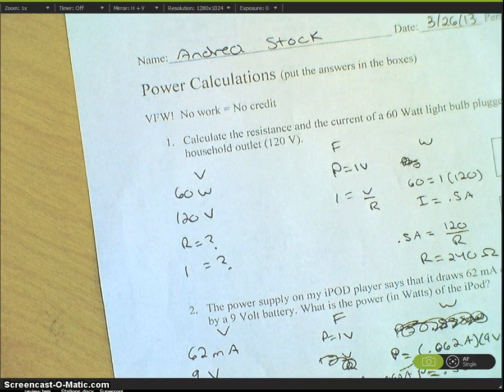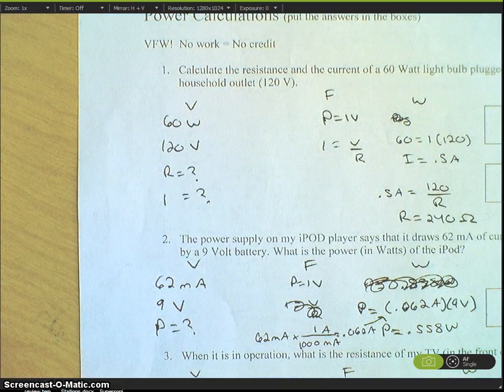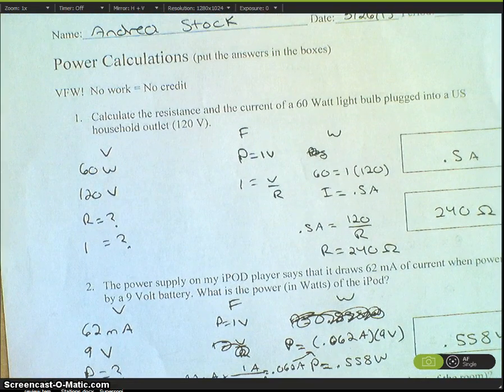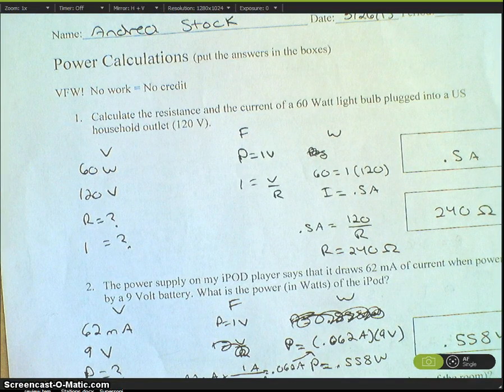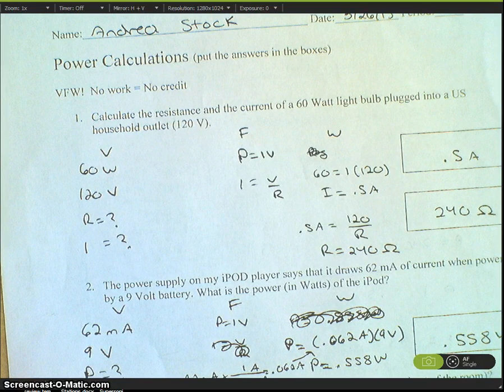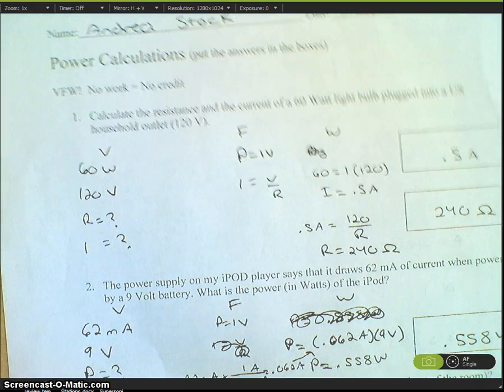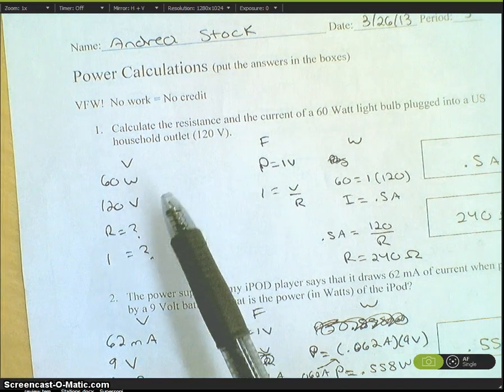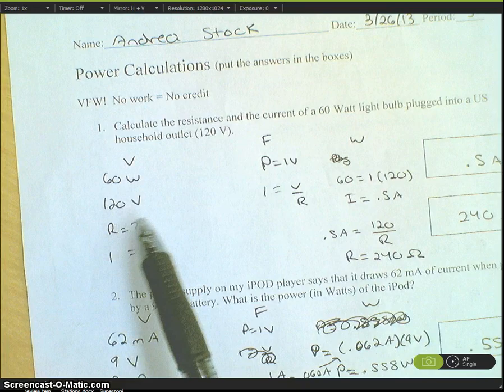I'm doing the first problem on the back. The question is: calculate the resistance and the current of a 60 watt light bulb plugged into a US household outlet which is 120 volts. I set it up as V, I, P, W. We have 60 watts and 120 volts. We need to find resistance and current.